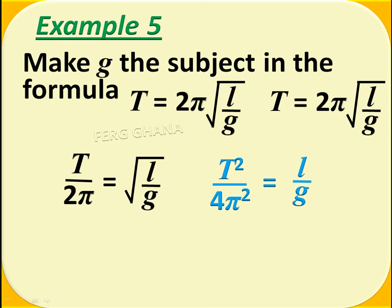Now, removing the square root sign, we have to square both sides, so we have T square over 4 pi square equals L over G.